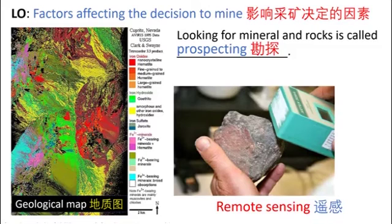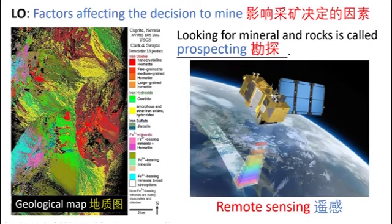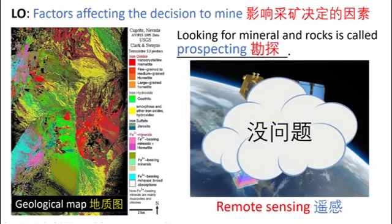Another remote sensing technique uses satellites. If you have a naturally occurring radioactive material, for example uranium, you can use satellites to pick up the unique radioactive signature that these materials emit. This data can then be processed and used by geologists to locate different rocks and minerals. Using satellites is beneficial because you can prospect a very large area of the earth's surface very quickly, and it can be used even in cloudy weather. However, it is very expensive and requires processing a lot of data.